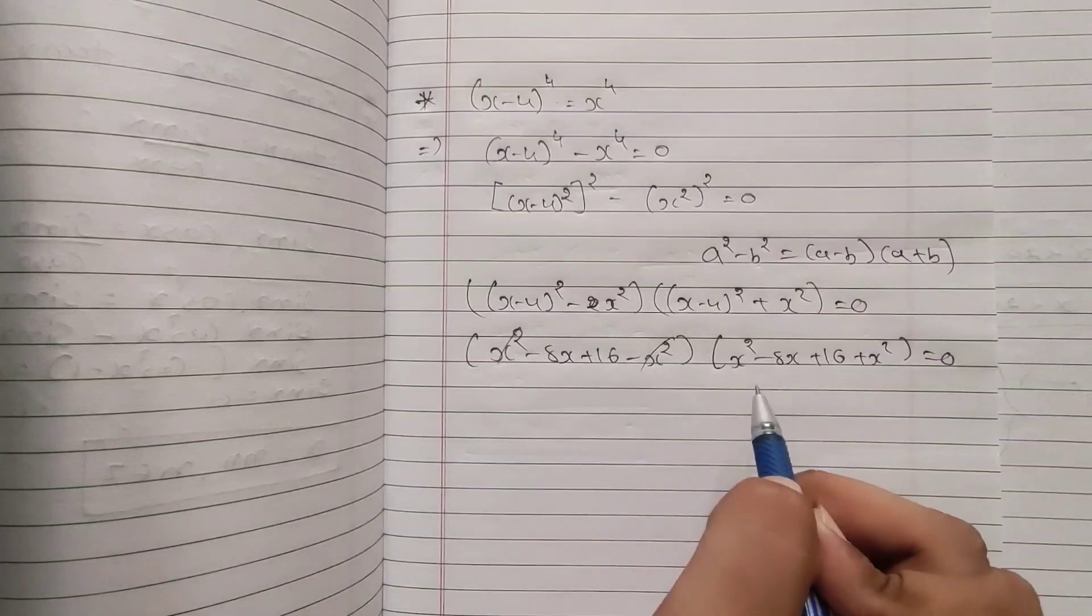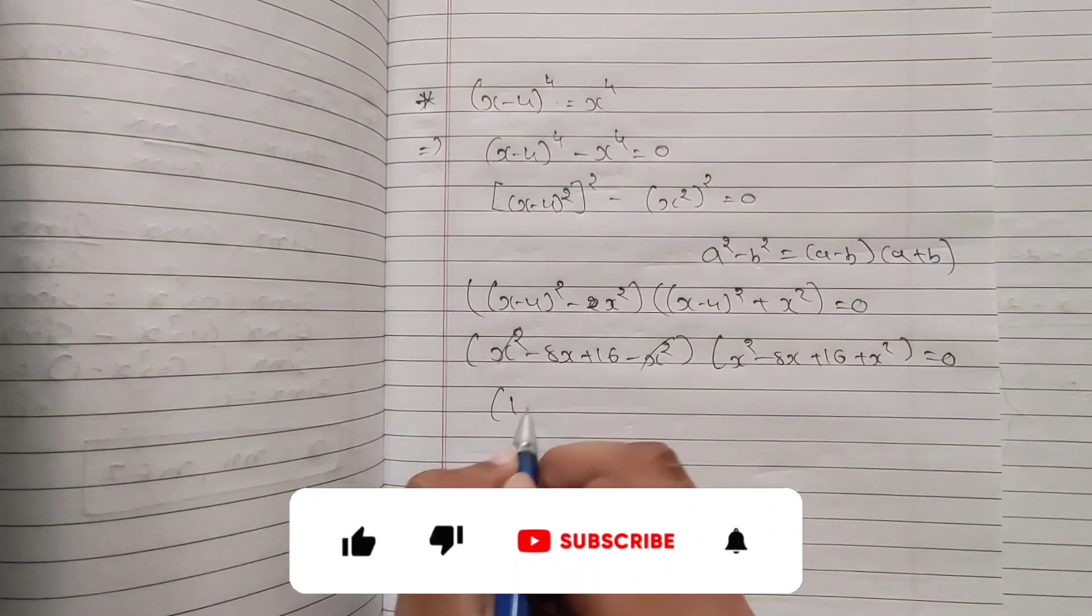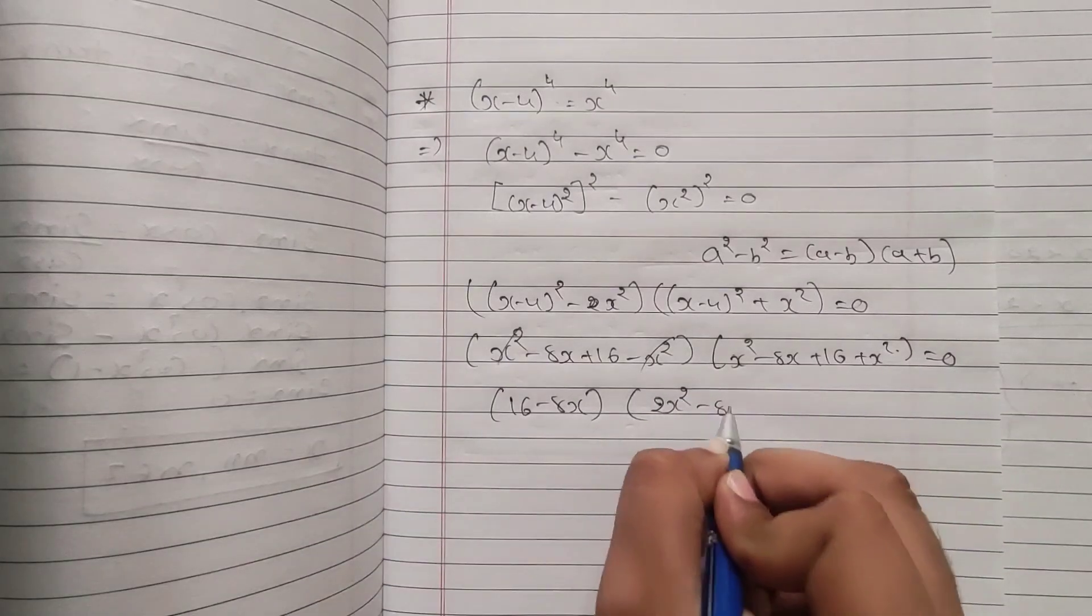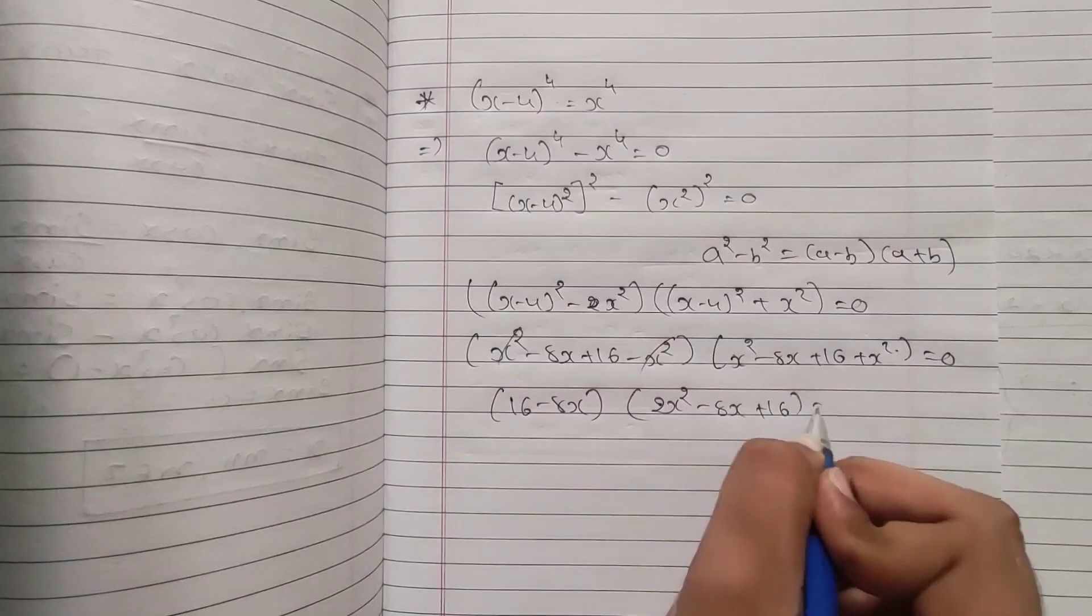So here x² and -x² will be cancelled out. What will remain? 16 - 8x, and here x² + x² becomes 2x² - 8x + 16 = 0.